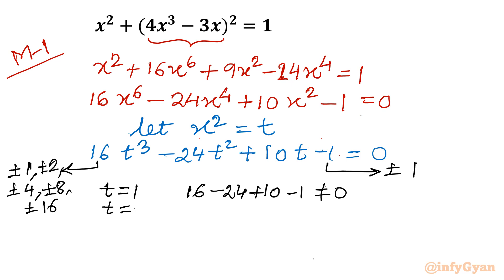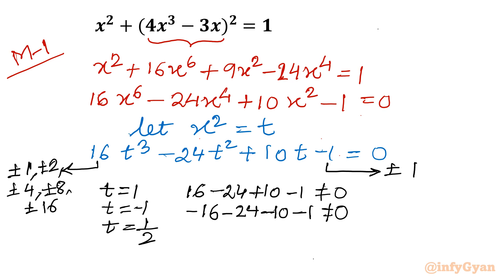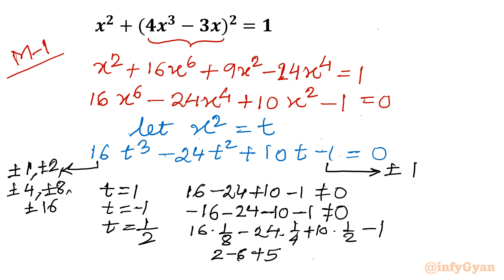Testing t = -1: -16 - 24 - 10 - 1 ≠ 0, not a solution. Now let's try t = 1/2: 16×(1/8) - 24×(1/4) + 10×(1/2) - 1 = 2 - 6 + 5 - 1 = 0. Yes, it equals zero!